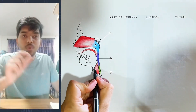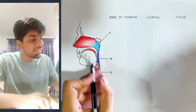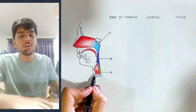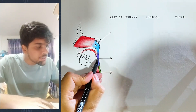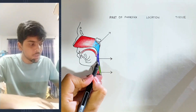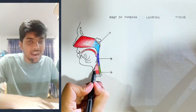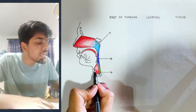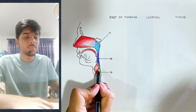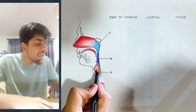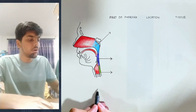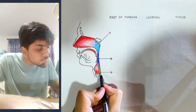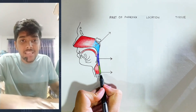When you swallow food, you can fold this epiglottis cartilage and cover the glottis, because food should not go into the air pipe — it should go into the food pipe. The food pipe is the esophagus, also called the gullet.